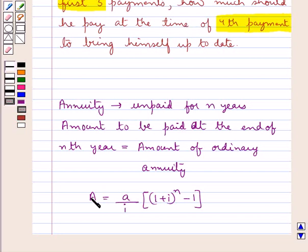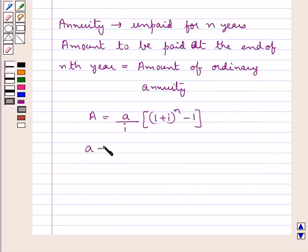This is capital A which is the amount that is to be paid at the end of the nth year if the annuity is left unpaid for N years, where small a is the annual payment of each installment.